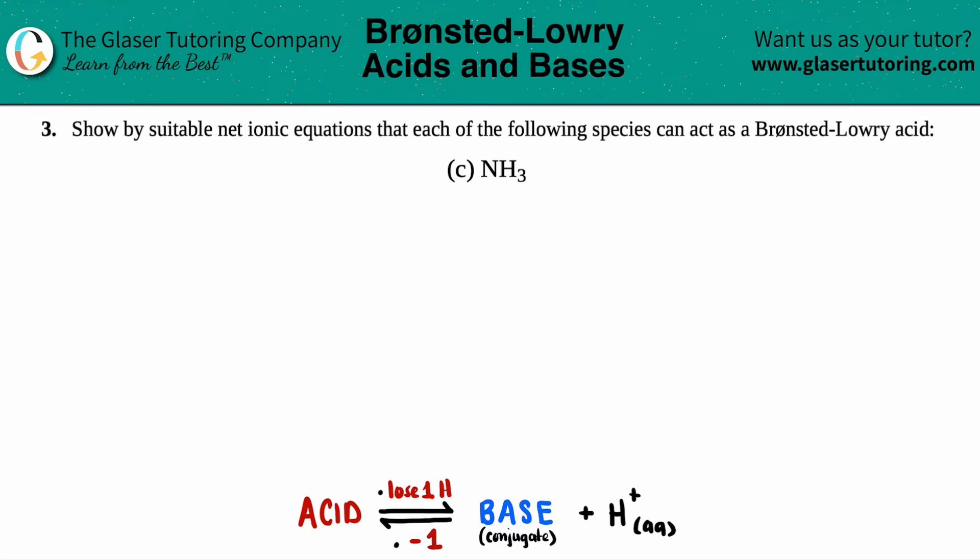Number three, show by suitable net ionic equations that each of the following species can act as a Bronsted-Lowry acid, and then we have letter C. So in this case, we need to show with an equation how NH3 is acting as an acid, specifically a Bronsted-Lowry acid. Bronsted-Lowry were just the two scientists that invented this idea.